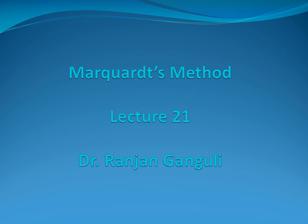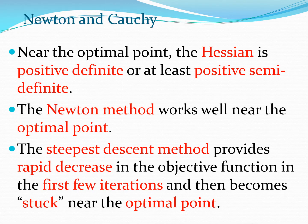Today's video we are going to discuss the Marquardt method, and this is lecture 21. We have seen that the Newton method works very well when we are near the optimal point of a function, and this also happens because the Hessian matrix is typically positive definite or at least positive semi-definite near the optimal point.